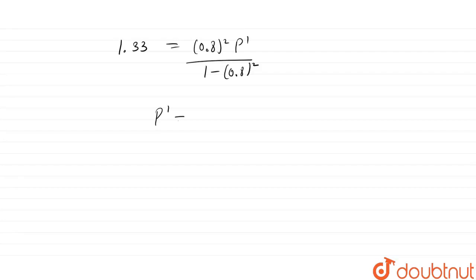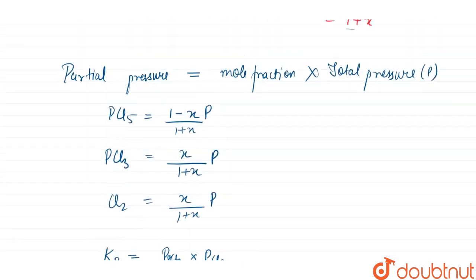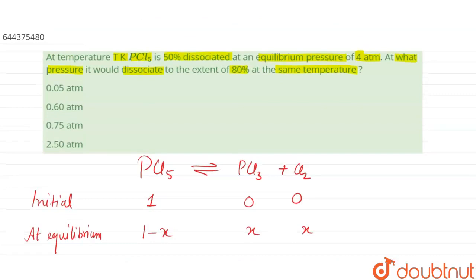P' equals 0.75 atm. So the pressure for 80 percent dissociation is 0.75 atm. Looking at the options: option 1 is 0.05 (incorrect), option 2 is 0.6 (incorrect), option 3 is 0.75 (correct), and option 4 is also incorrect. So the correct answer is option 3.